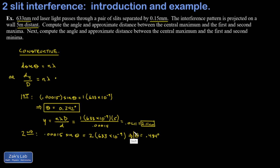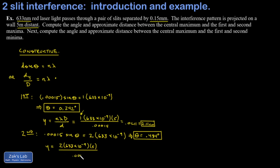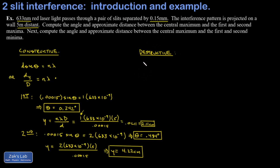For the y-value of the second maximum, replacing n with 2 in the formula gives 2 × 633 × 10⁻⁹ × 5 divided by 0.00015, which is twice the previous value: 4.22 cm from center. Next we handle the destructive interferences — the dark spots between the maxima — using d·sinθ = (n + ½)λ for angles, and the corresponding y-formula y = D(n + ½)λ/d for distances.